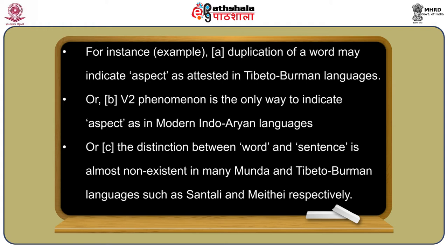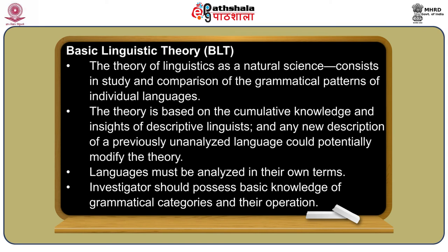Similarly, the V2 phenomena and the explicator compound verb — which we saw as Aryan features — were non-existent in Sanskrit and evolved much afterward. So grammars written on the basis of Sanskrit will completely omit the description of ECVs. Similarly, the dichotomy between noun and verb is not strict in languages like Munda — there is no strict dichotomy between noun and verb in Santhali or other Munda languages.